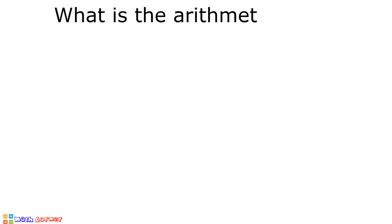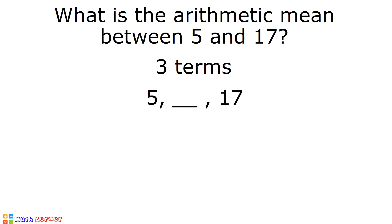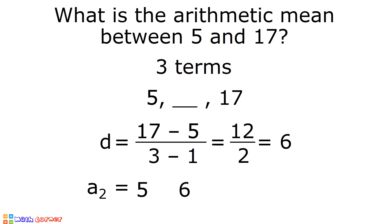Last example: what is the arithmetic mean between 5 and 17? There are three terms in this example because there is only one arithmetic mean between 5 and 17. 5 is our first term, one missing term, and 17 is our third term. The common difference is 17 minus 5 divided by 3 minus 1: 17 minus 5 is 12, 3 minus 1 is 2, and 12 divided by 2 is equal to 6. To determine the arithmetic mean or the second term, we add the first term and the common difference: 5 plus 6 is equal to 11. 11 is our missing term, or the arithmetic mean between 5 and 17.